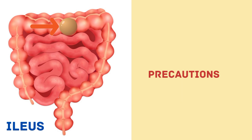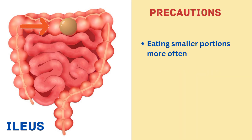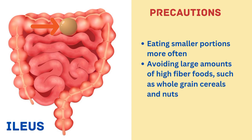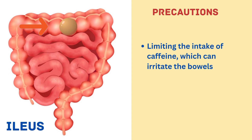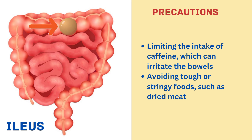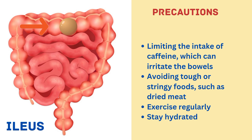Now let us discuss precautions: 1. Eating smaller portions more often. 2. Avoiding large amounts of high-fiber foods such as whole grains, cereals and nuts. 3. Focusing on eating soft or liquid meals. 4. Limiting the intake of caffeine, which can irritate the bowels. 5. Avoiding tough or stringy foods such as dried meat. 6. Exercising regularly. 7. Staying hydrated.